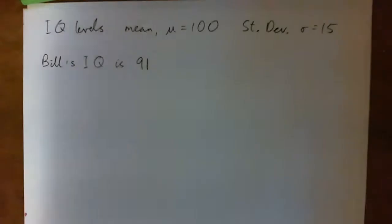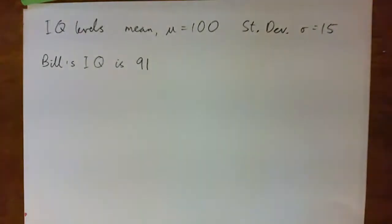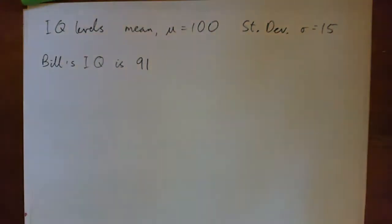Alright, so we have IQ levels with a mean of 100 and standard deviation of 15, and Bill's IQ is 91, so let's talk about that.